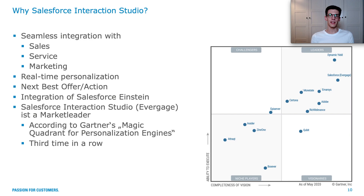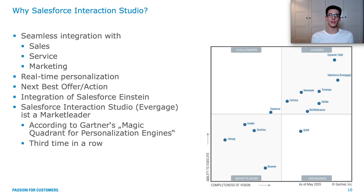First, if you're already using tools within the Salesforce platform, it's easy to integrate — with seamless integration across sales, service, and marketing streams used by your employees. You can deliver personalized offers and personalized information in real time, all based on artificial intelligence. And it isn't just something we think is great — there's data behind it. In Gartner's Magic Quadrant for personalization engines, Interaction Studio has been named a leader for the third time in a row, making it a truly great product on the market for delivering personalized experiences.